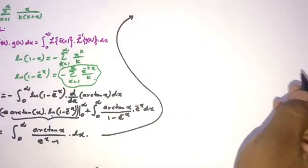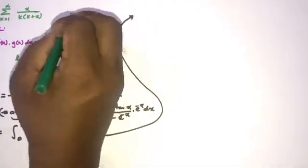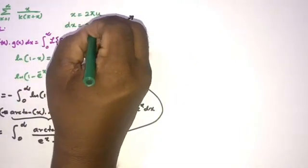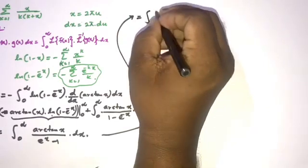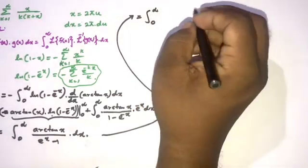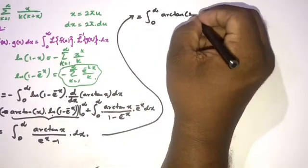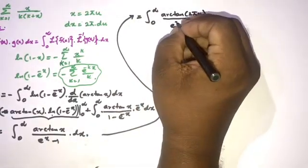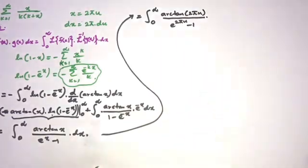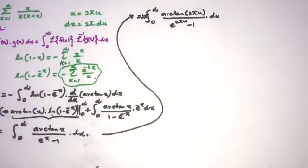To evaluate this integral I am going to use the substitution x equals 2πu, so dx equals 2π du. Plugging in, the integral becomes 2π times the integral from 0 to infinity of arctan(2πu) over (e^(2πu) minus 1) du.